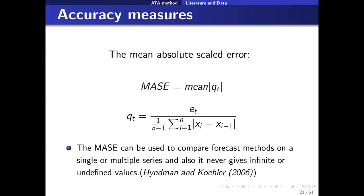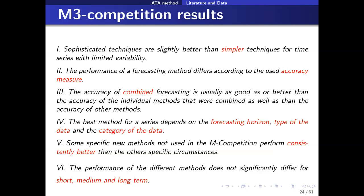The results from the M3 competition showed that simpler techniques were usually better, the performance of the methods varied according to the accuracy measure used, and combined forecasting was beneficial. They also concluded that there is no single best method — the best method varied according to the forecasting horizon, the type of data, and the category of the data.